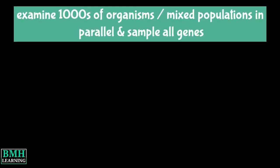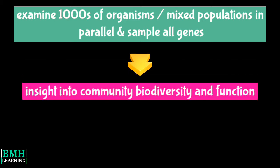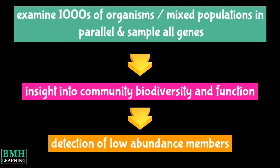Shotgun Metagenomic Sequencing is an environmental sequencing approach used to examine thousands of organisms or mixed populations in parallel, and comprehensively sample all genes, thus providing insight into community biodiversity and function. Shotgun Sequencing allows for the detection of low abundance members of microbial communities.